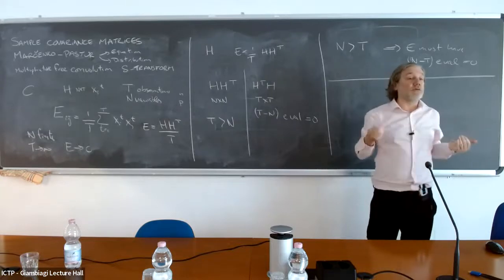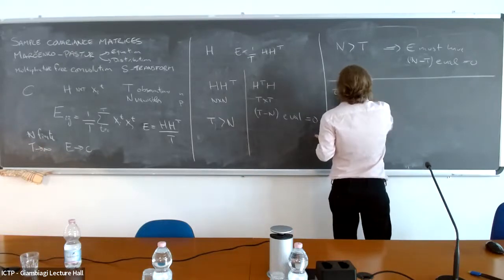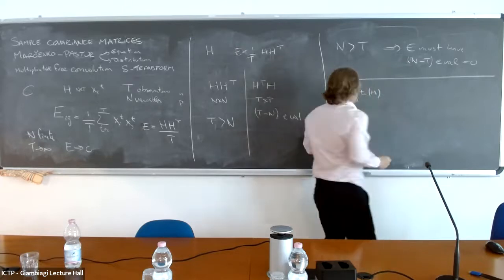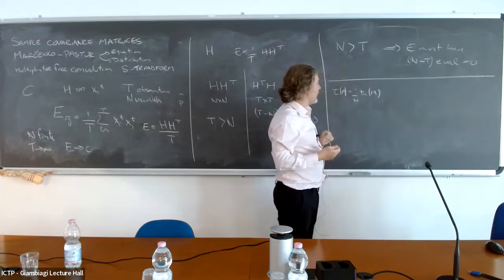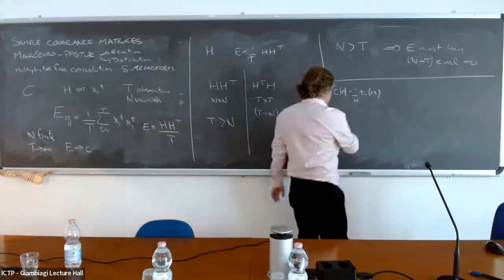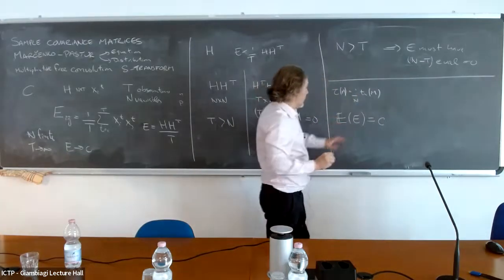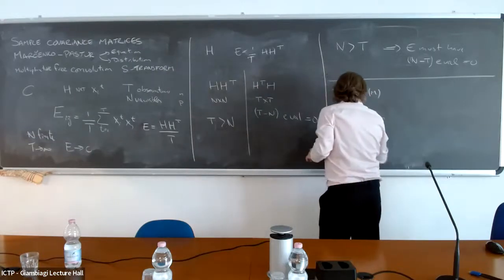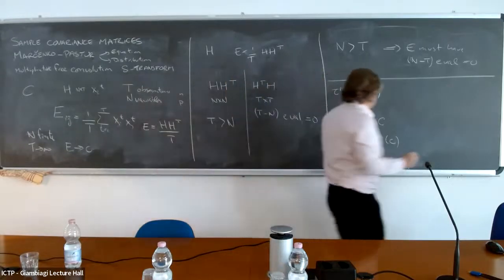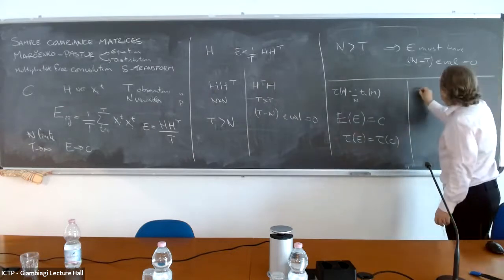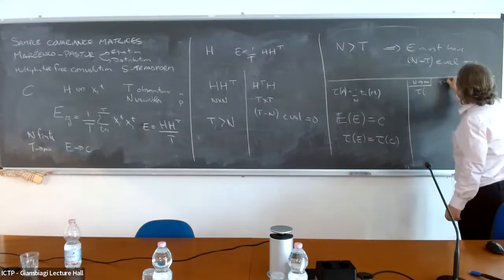Another thing I can do is compute the moments. The moment operator is tau of some matrix M, which is (1/N) trace of the matrix. This typically becomes self-averaging. I could add an expectation value. In this setup, the expectation value of E is indeed C. So the trace operator is linear, and I do have that the normalized trace of E equals the normalized trace of C — the first moment matches. But it's a relatively easy computation to see that already the second moment doesn't match. I'm taking the N goes to infinity limit, where the ratio Q = N/T is fixed.